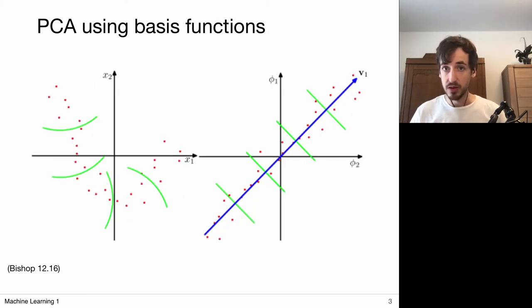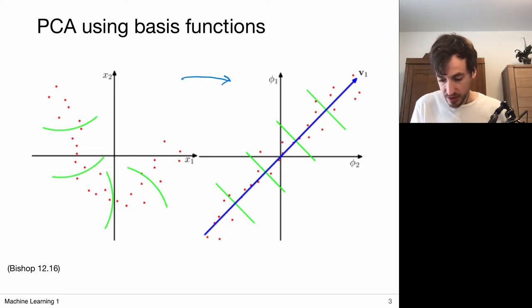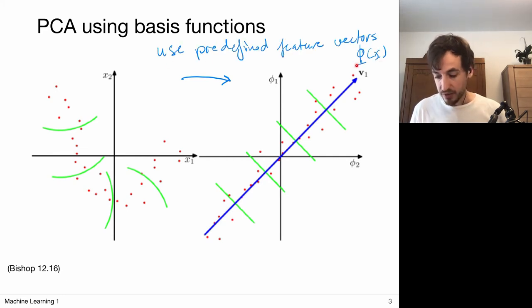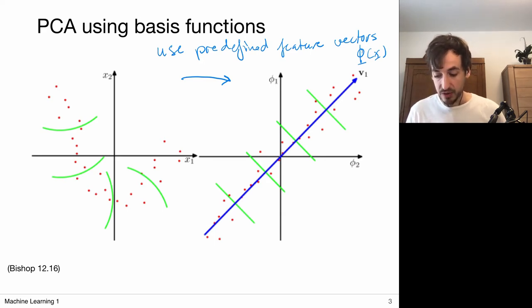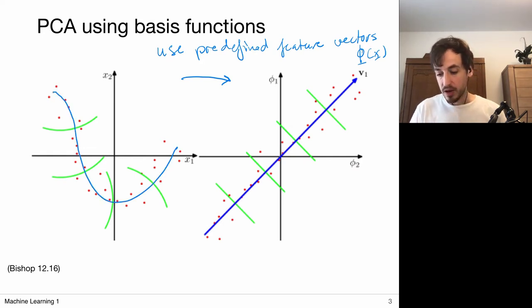The first sensible thing you could do is try to turn this into a linear problem. Suppose this is my data set — it follows a one-dimensional parameterization with noise around it and we want to recover this particular line. What you could do is work with basis functions, turning this into a new feature representation. If we're clever, we pick our basis functions so that the data is unwrapped into a linear structure, and then we can do principal component analysis in this new feature space where there is one clear principal direction, nicely recovering the one-dimensional manifold structure.